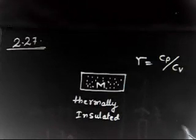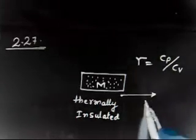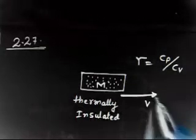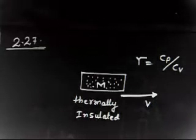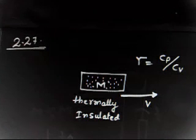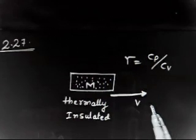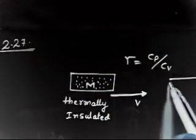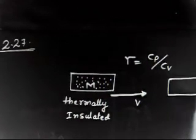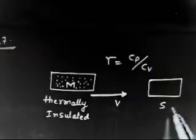The vessel moves with a velocity V. So this cylinder is moving with a velocity V. Find the gas temperature increment resulting from a sudden stoppage of the vessel. So this vessel is moving with velocity V and suddenly this vessel stops — a sudden stop.